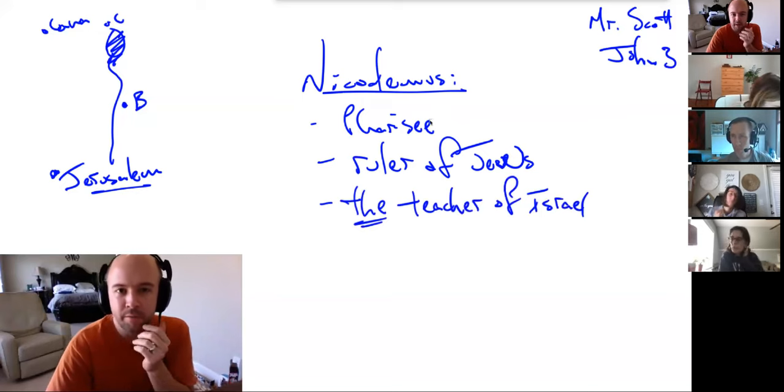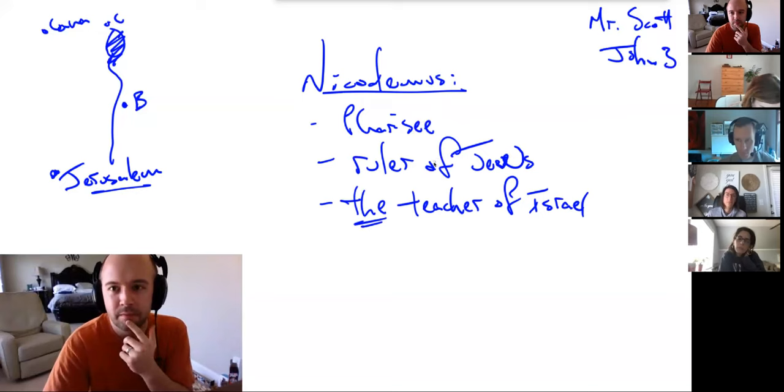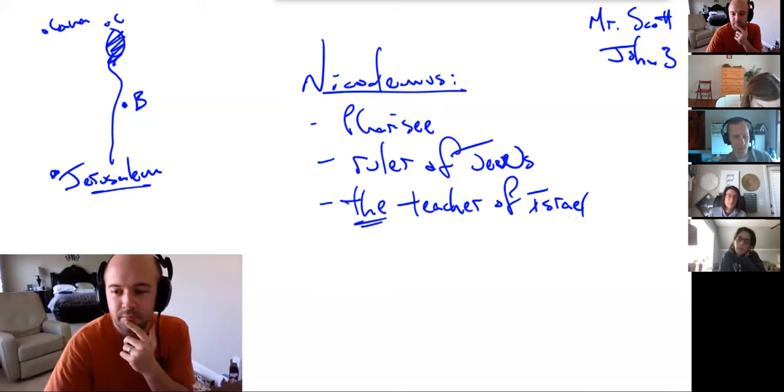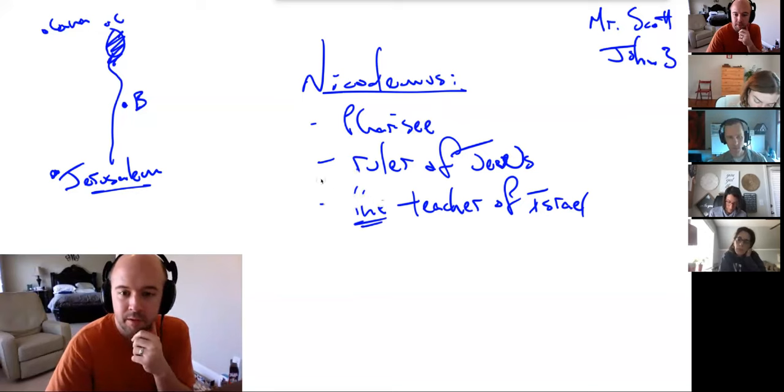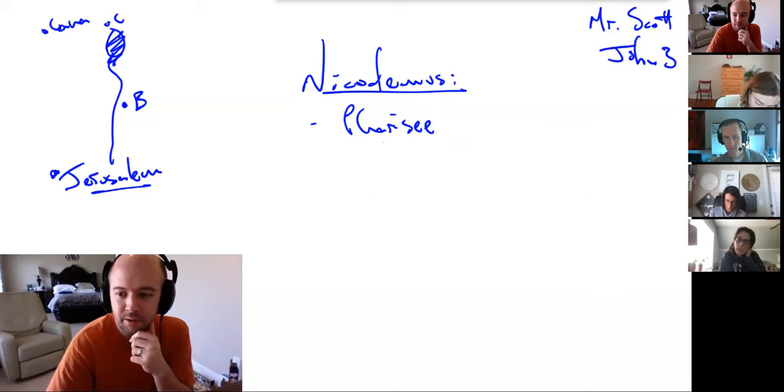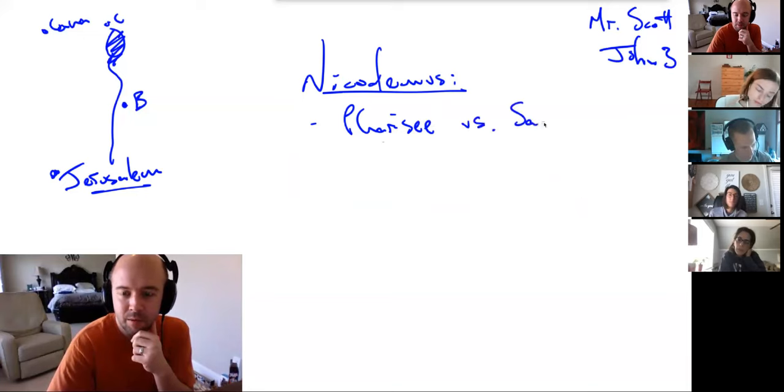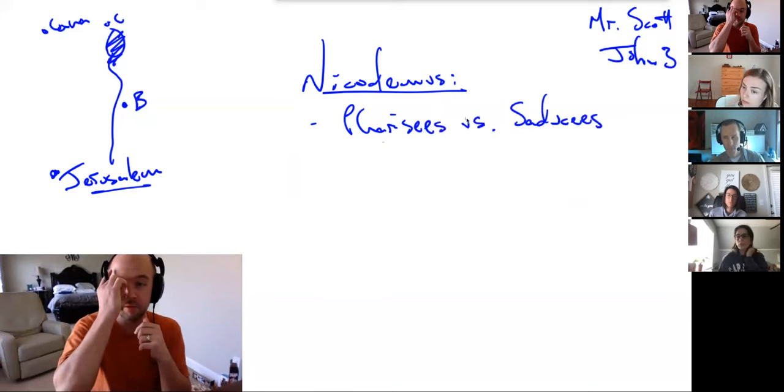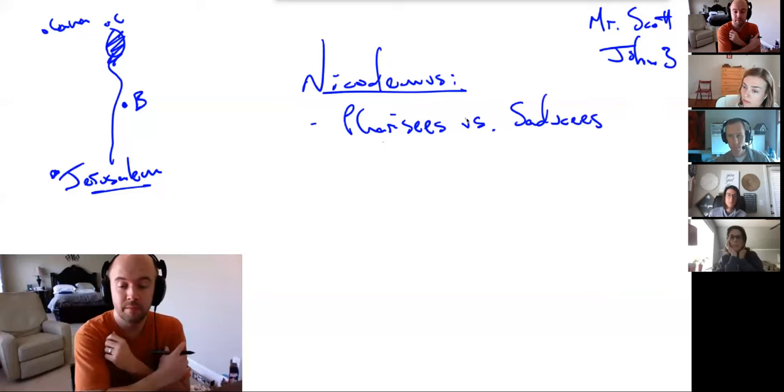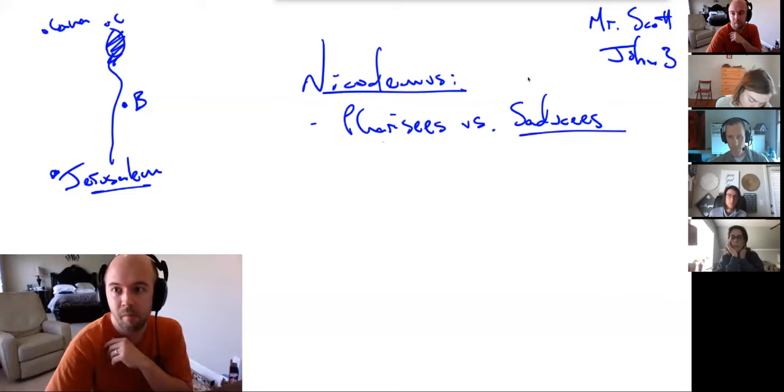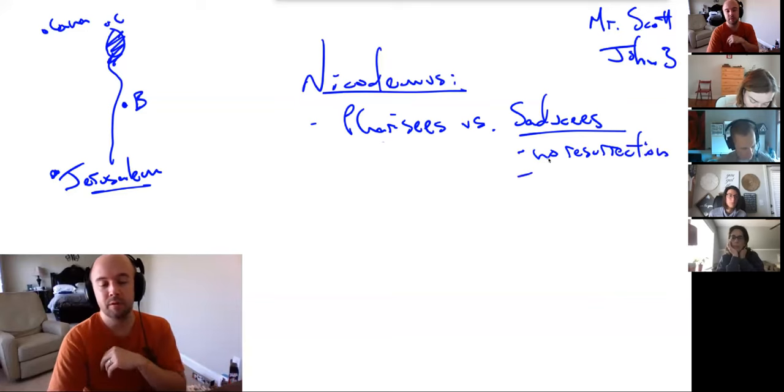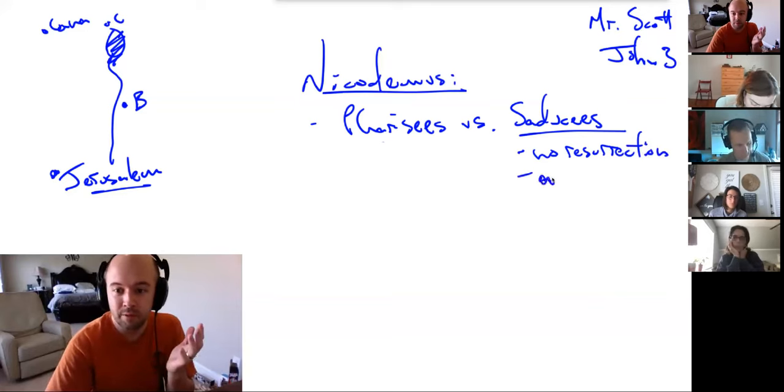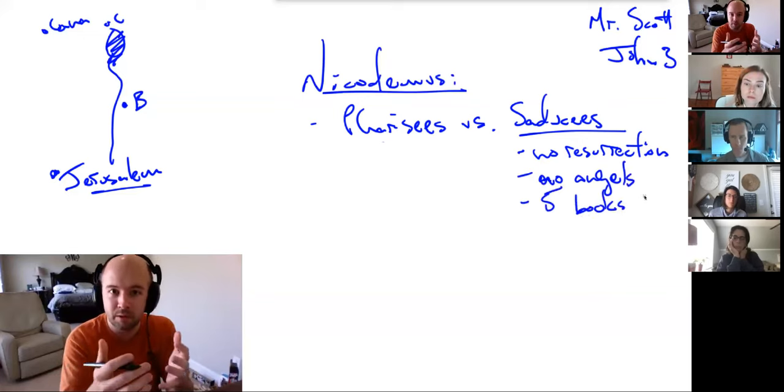Now, who remembers what a Pharisee is? What is a Pharisee? They were a sect of the Jews who cared very deeply about the details of the law. They were very rules-oriented. Very good. They were righteousness-oriented, I guess I should say. And so, there was another sect called the Sadducees. And what's the big difference between these two groups? Pharisees versus Sadducees. Who remembers? There was something the Sadducees did not believe in. In the resurrection? That's right. They didn't believe in the resurrection from the dead.